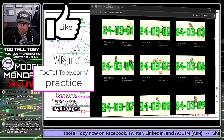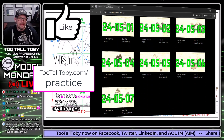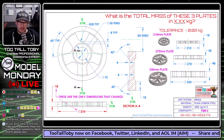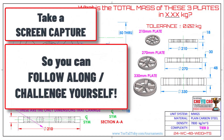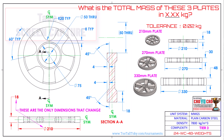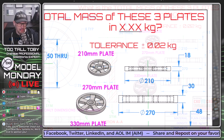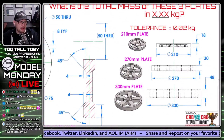What is the mass of these three plates in kilograms? This is kind of a cool, fun model, because there's not only a few ways to solve the model itself, but there's also a few ways to solve the question. The question is: what is the total mass of these three plates in kilograms? So how do you come up with that total mass?